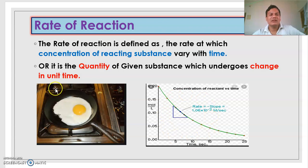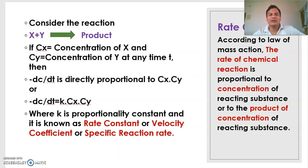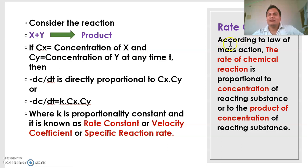This is the explanation of the graph. Now we will see the next part, that is the rate constant. According to the law of mass action, the rate of chemical reaction is proportional to the concentration of the reacting substance.